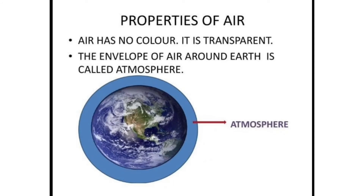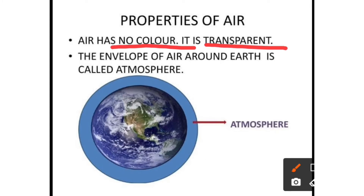Properties of air: air has no color — it is transparent. You can see the people and things around you through the air. The envelope of air around the earth is called the atmosphere. This is very important.